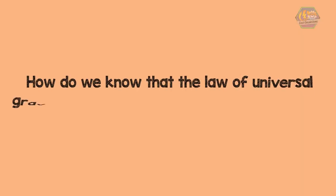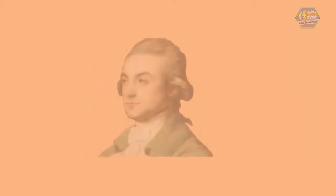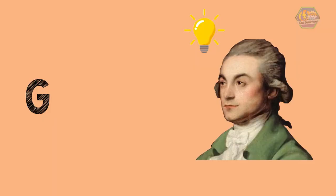So how do we know that the law of universal gravitation made by Sir Isaac Newton is true? Well, another British scientist made careful measurements with some of the most sensitive instruments of the time. This scientist is Henry Cavendish. He figured out that G was equal to about...